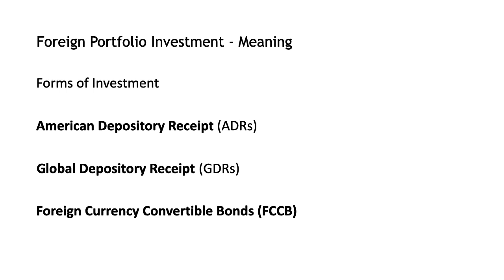The second way of investing is into debt, where 100% FPI investment has to be made into debt securities only. One form of FPI is American Depository Receipts (ADRs). An ADR is a negotiable certificate issued by a US bank representing a specified number of shares in a foreign stock that is traded on a US exchange. ADRs are denominated in US dollars, with the underlying security held by a US financial institution overseas, and help reduce administration and duty costs levied on each transaction.